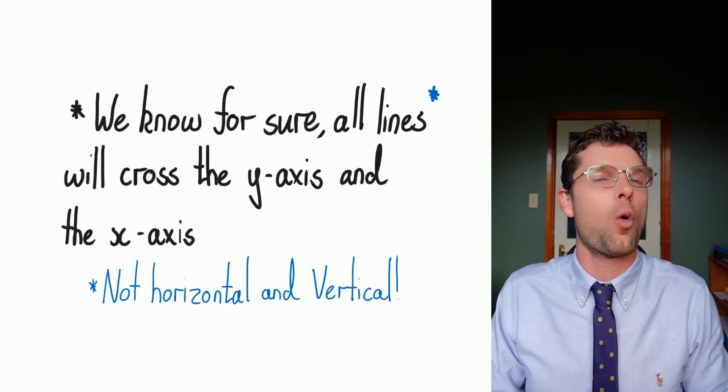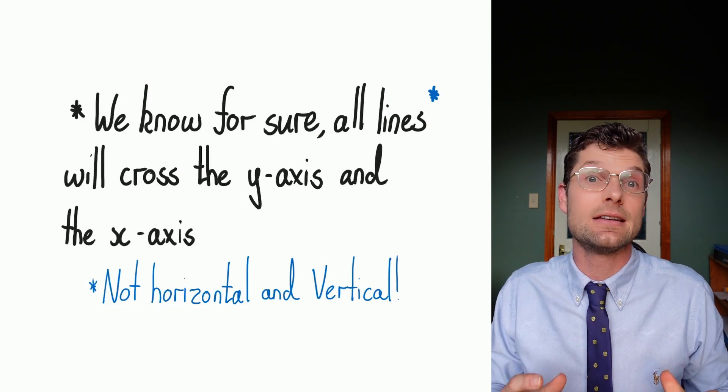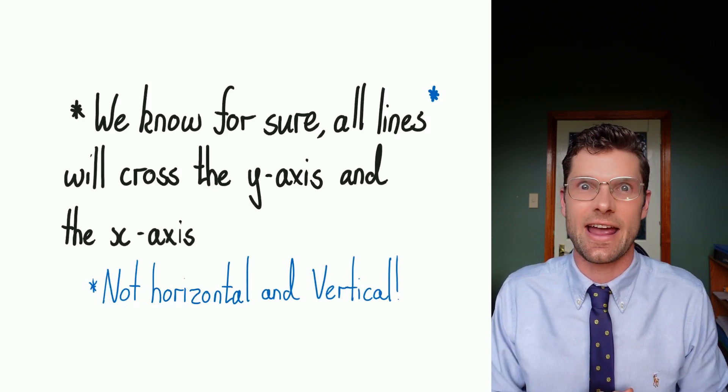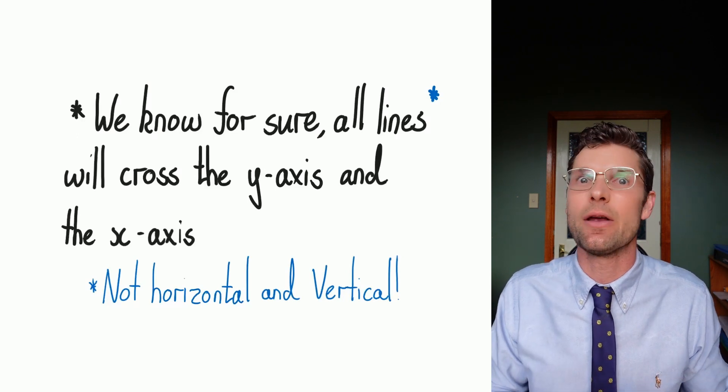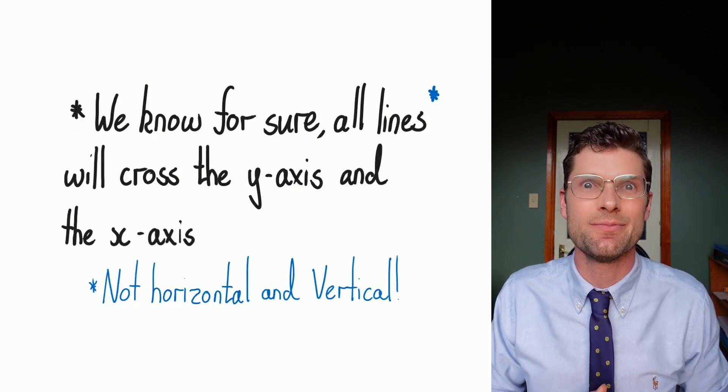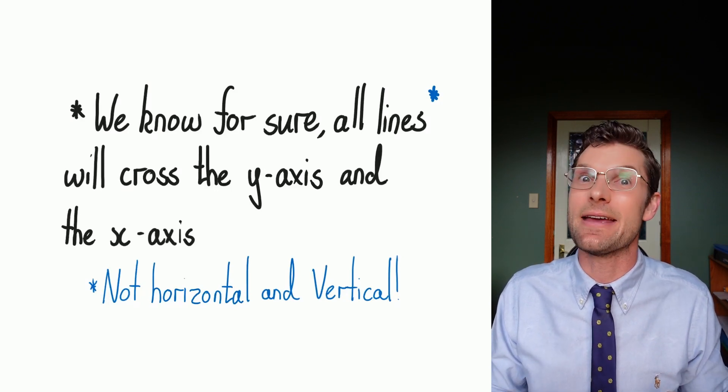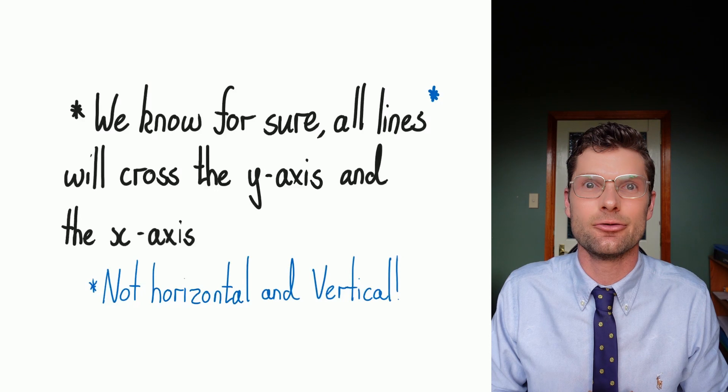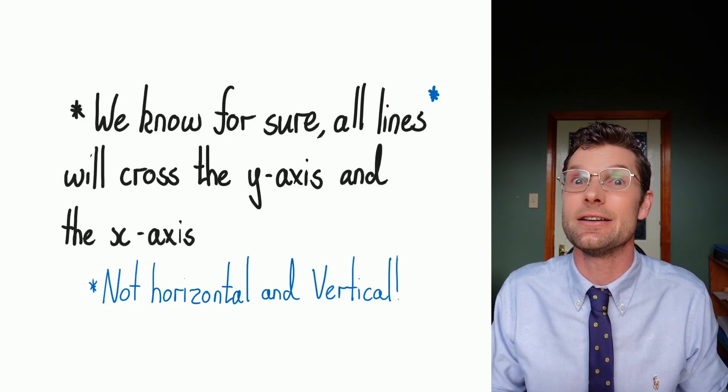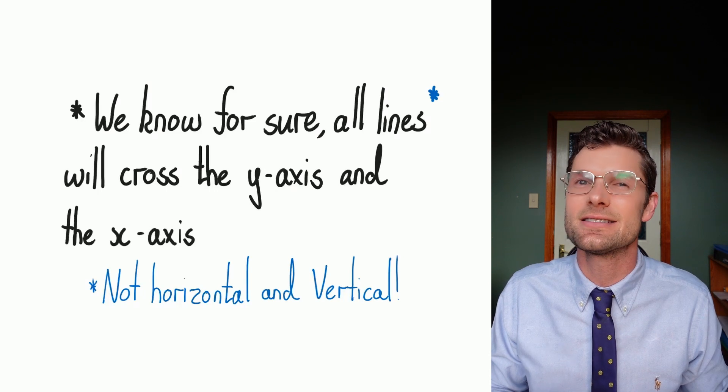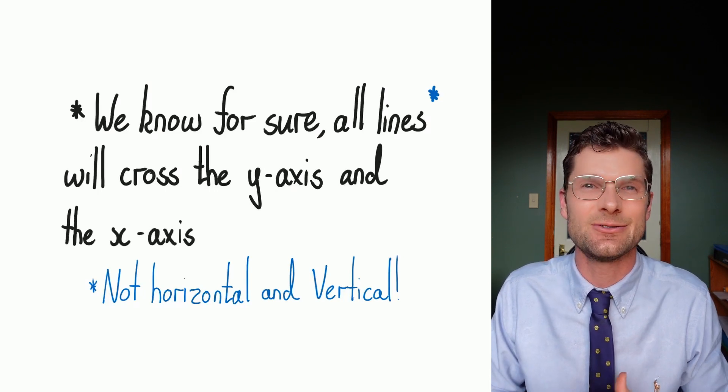So we know for sure all of the lines that we're gonna look at definitely cross the y-axis and the x-axis because it's a diagonal line. This means at some point y is always equal to zero and x is always equal to zero. Just a note there, when I say all lines, I mean all diagonal lines. Horizontal and vertical lines do only cross one axis. So just make sure you know that as we move forward.